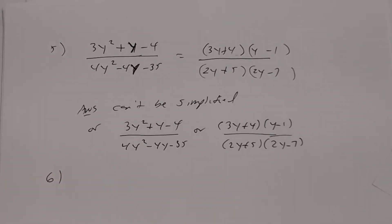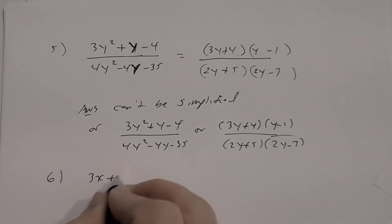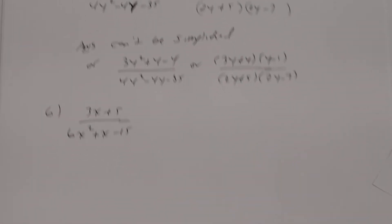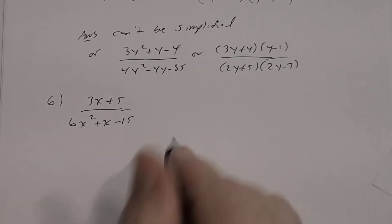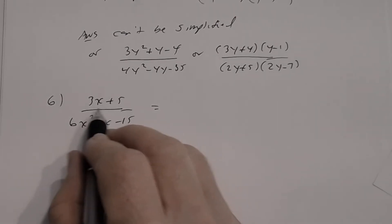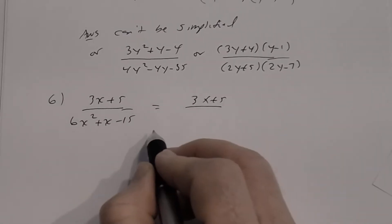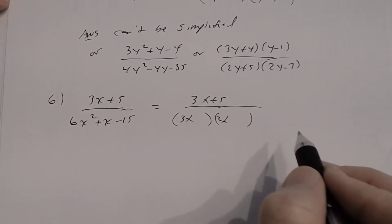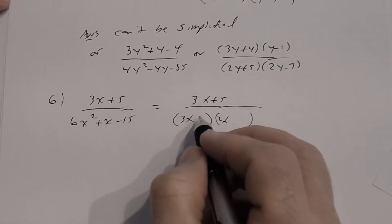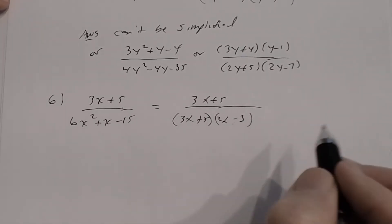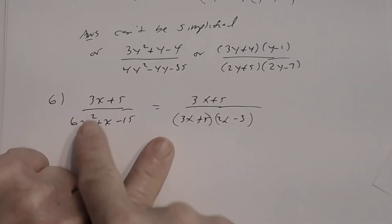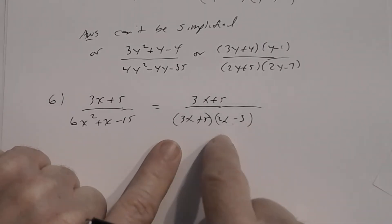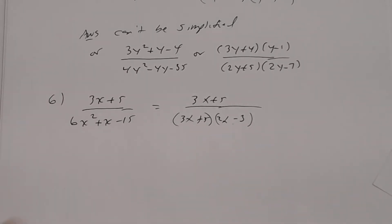Number six: (3x + 5) divided by (6x² + x − 15). The numerator is linear with GCF 1, so just rewrite it. The denominator: try 3x and 2x for 6x², and try +5 and −3 for −15. Double-check: 3x·2x = 6x², 5·(−3) = −15, outer −9x + inner 10x = x. ✓